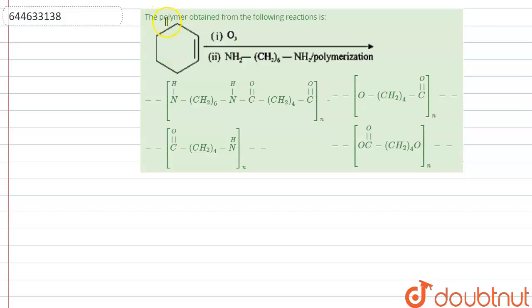Hello guys, our today's question is the polymer obtained from the following reaction: when cyclohexene will first react with O3 and then react with NH2-CH2-H6-NH2. This process is called polymerization and the options given are ABCD.